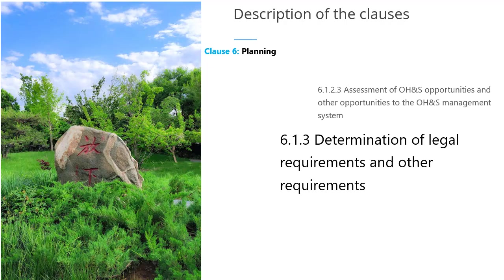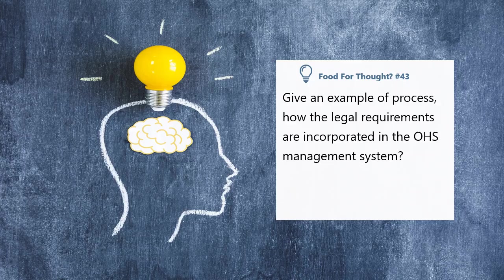Clause 6.1.3 requires that the organization shall have a documented process to identify the applicable legal and other requirements by having access to up-to-date requirements, interpreting those requirements and how they are applicable to them, and complying with those requirements through systematic procedures within their OHS management system. The organization needs to maintain and retain documented information related to legal and other requirements.